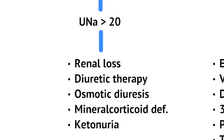What causes high urine sodium in hypovolemic hyponatremia? Common causes include diuretic therapy such as Lasix, which causes loss of sodium and water leading to dehydration. Osmotic diuresis — in hyperglycemia, kidneys spill sugar and water follows, causing loss of sodium and water; that's why the first step of DKA management is giving fluids. Mineralocorticoid deficiency — lack of aldosterone means sodium spills out and water follows. And ketonuria — ketones in DKA draw water and sodium out through the kidneys, causing dehydration.